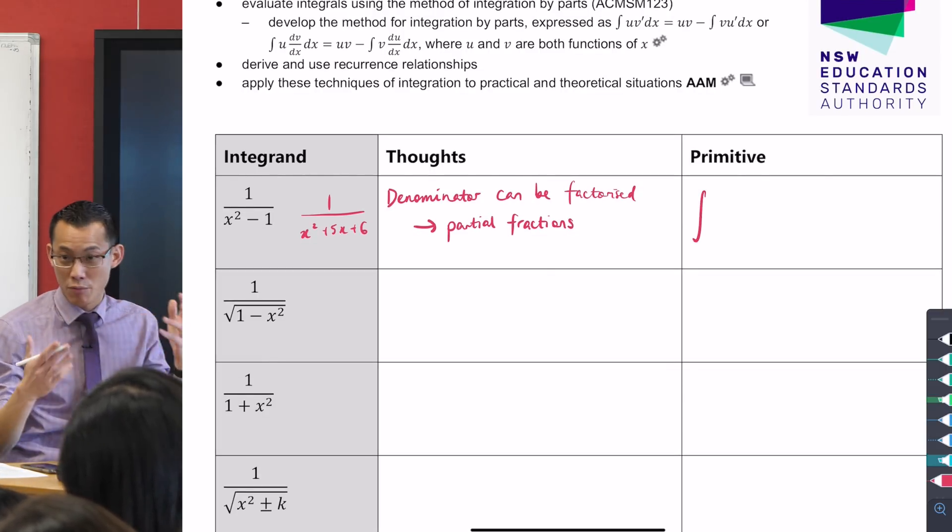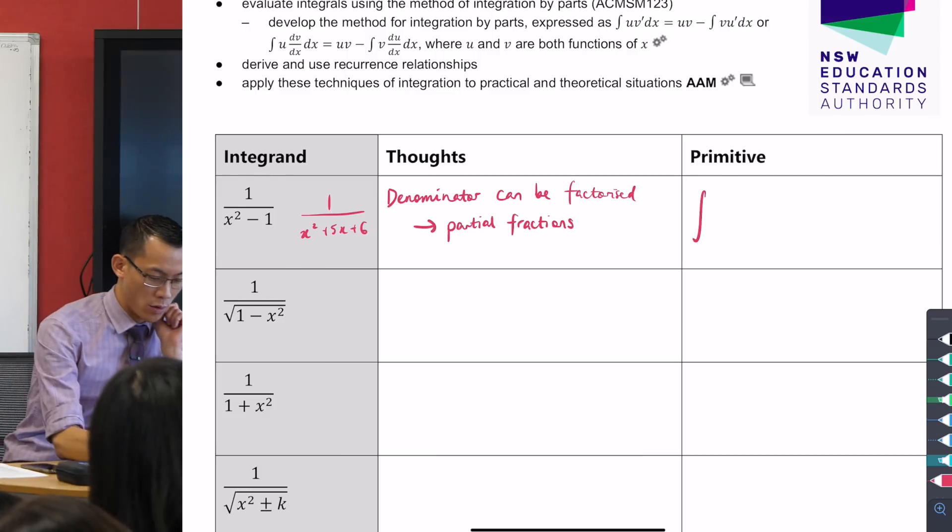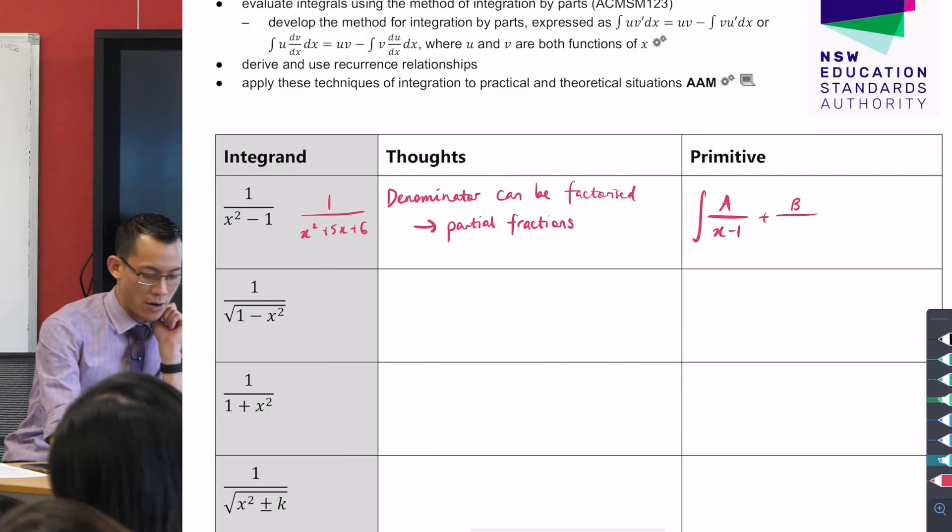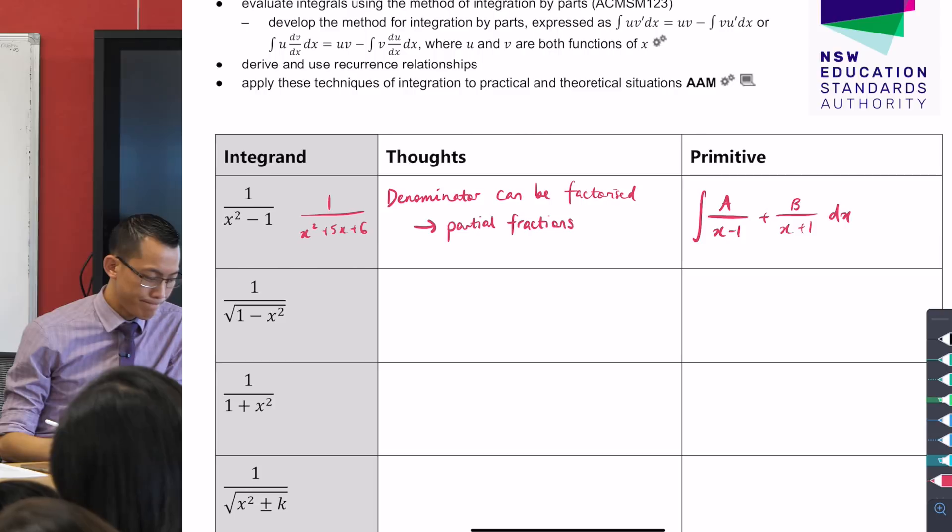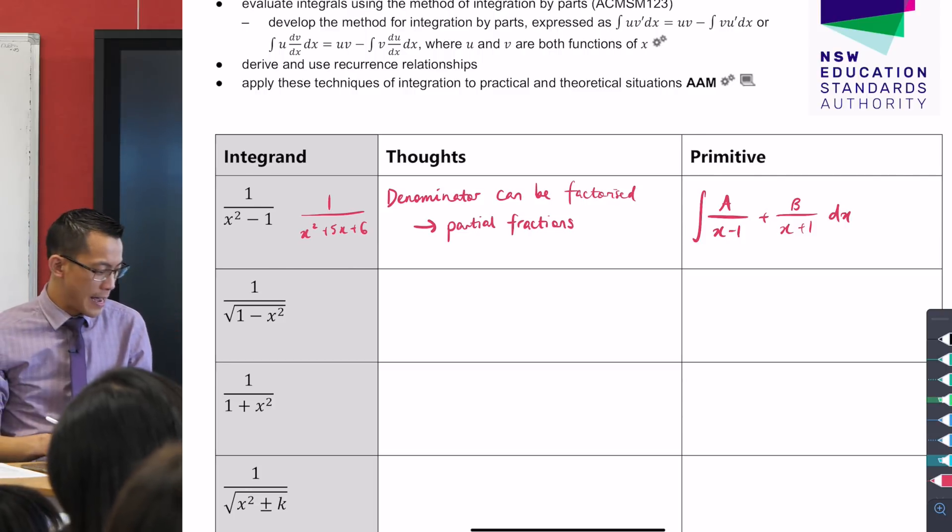And that happens a lot. So, this is the first sort of class of quadratic denominators that you're going to encounter. If the denominator can be factorized, then go ahead, split it apart into partial fractions. I'll be something like A on x minus 1, B on x plus 1, dx. You're going to get some logs, and then off you go.